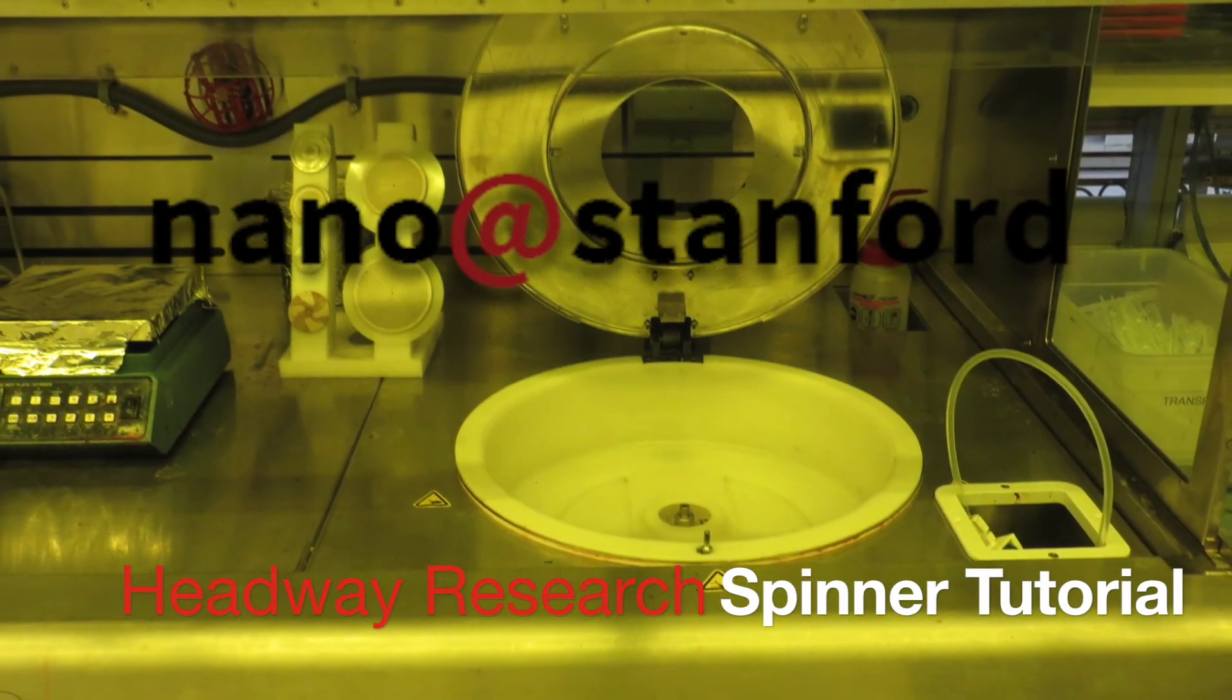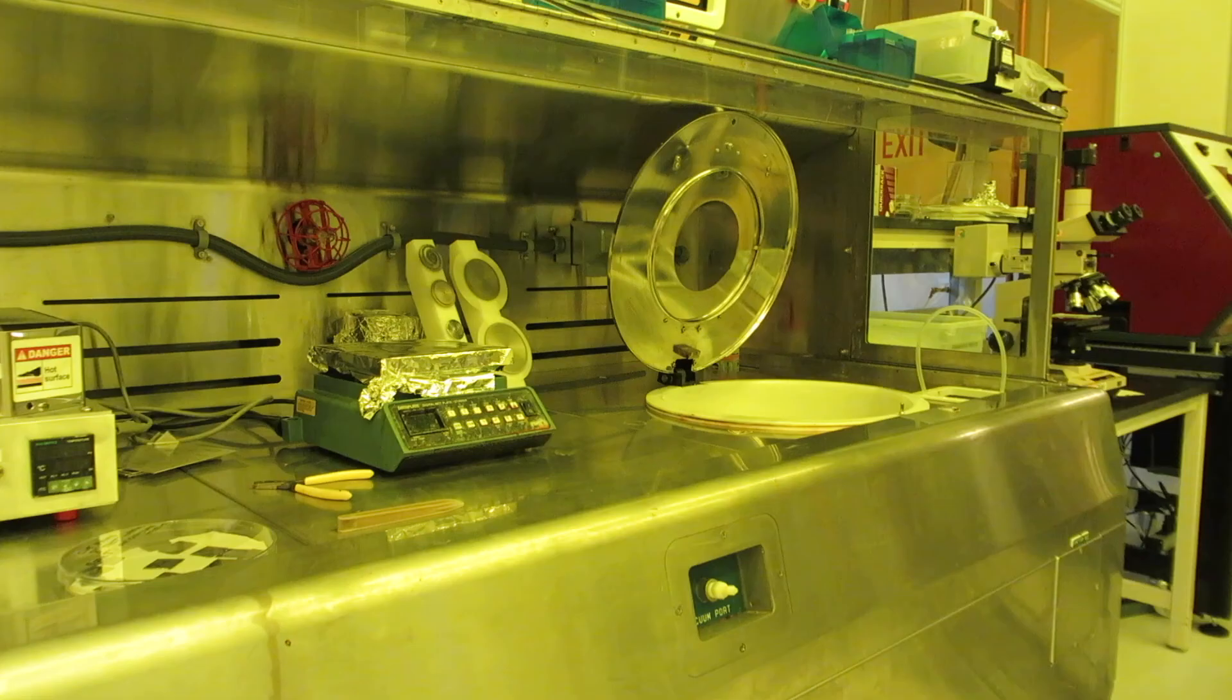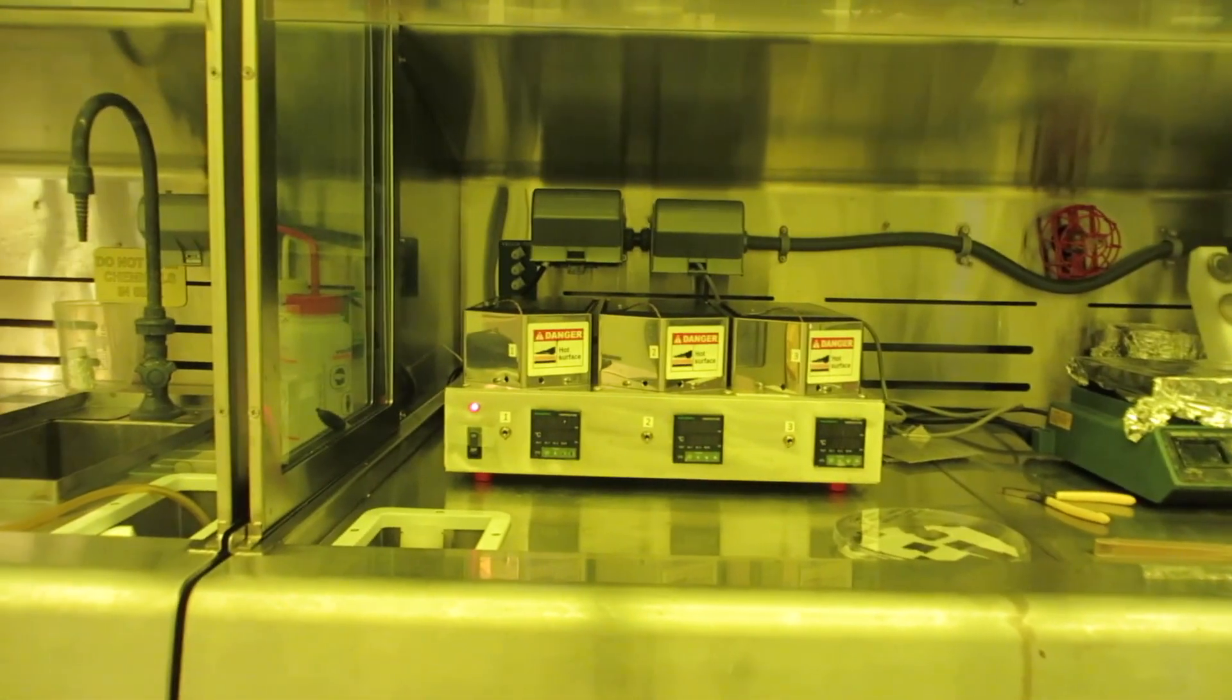This is a tutorial on using the Headway Research spinner in the flexible clean room. Before you start setting up the spinner, it's a good idea to go over to the hot plate and turn it on so that it'll have time to stabilize by the time you're ready to use it.